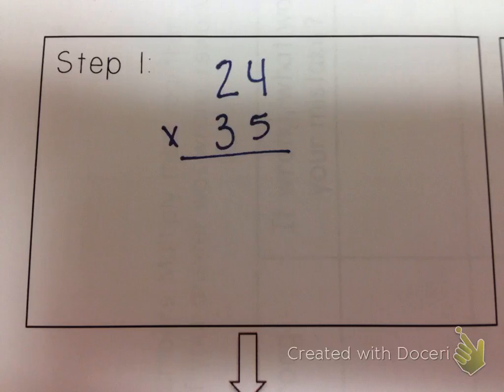So we're going to break it down by the different steps. Step one is going to be to multiply the numbers in your ones place. So four times five, which is twenty. So you're going to put the zero in the ones place, and you're going to carry your two.